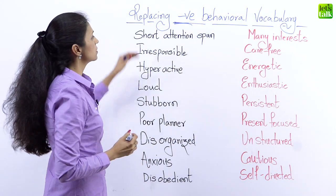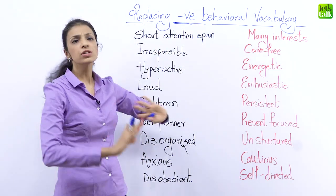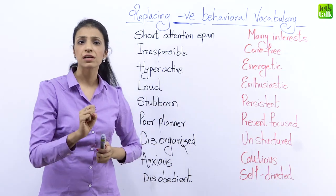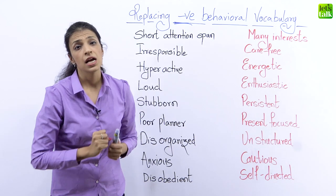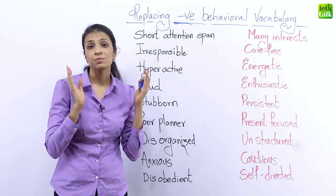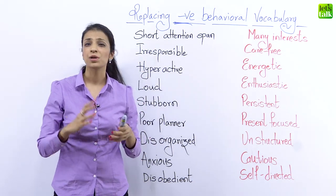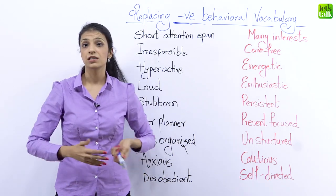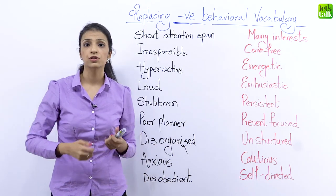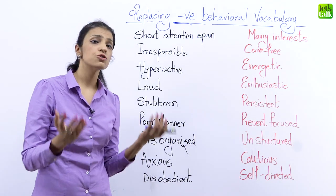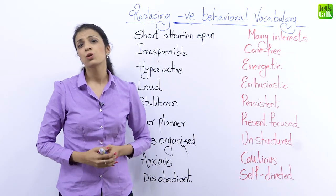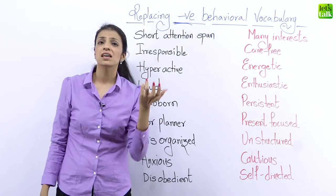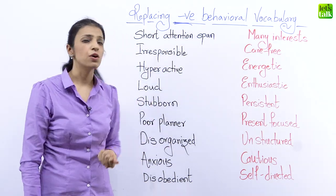The first one is short attention span. Someone who cannot focus on one thing for a very long period of time. It could be that you're at a project at work and beyond half an hour or an hour, you just lose interest and you kind of deviate — you start looking at your phone, researching, or playing a game. Basically, you have a short attention span; nothing captivates you for too long.